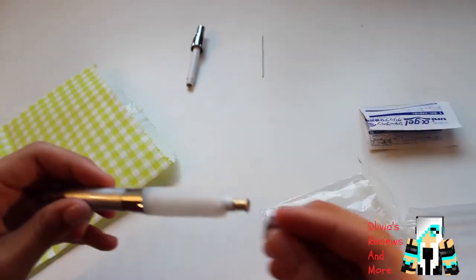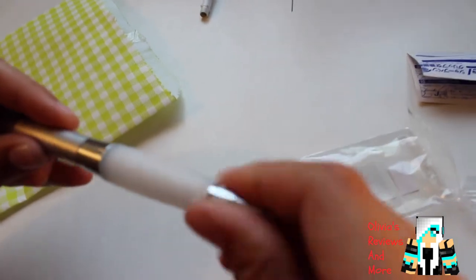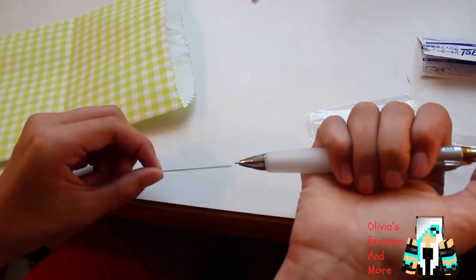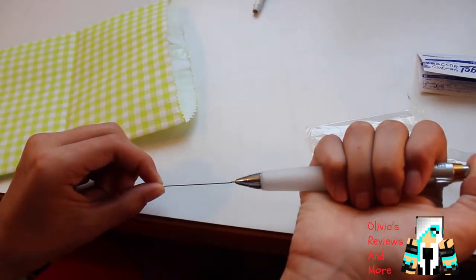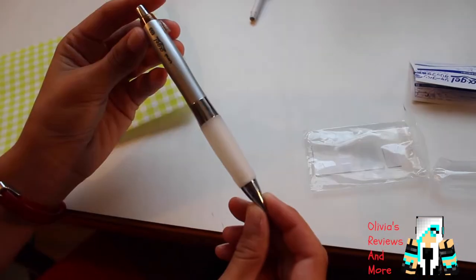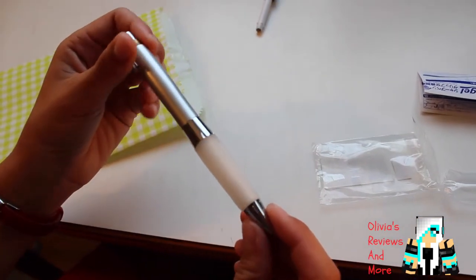Take your cap and put it in. Then take your piece of lead and insert it into your pencil. This is what it looks like at the end.